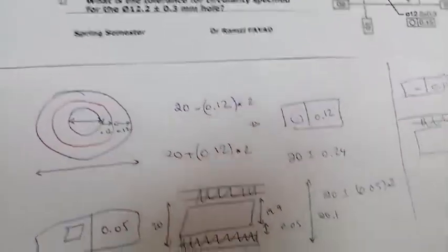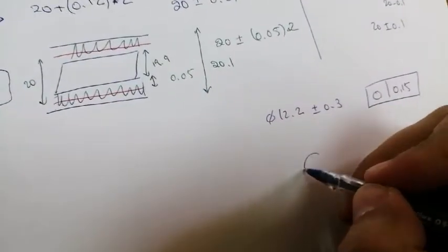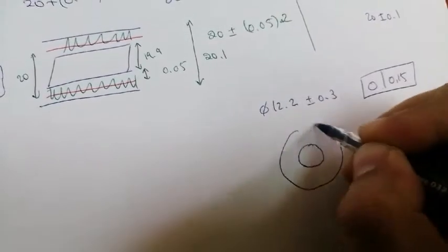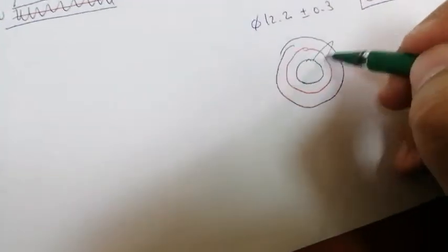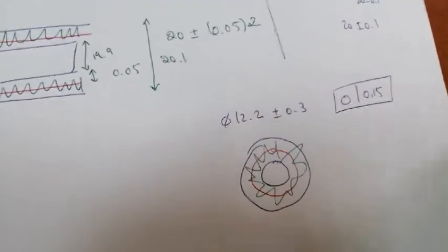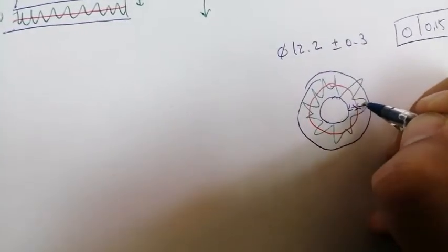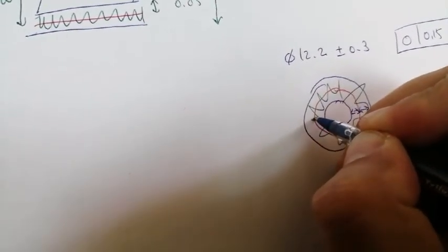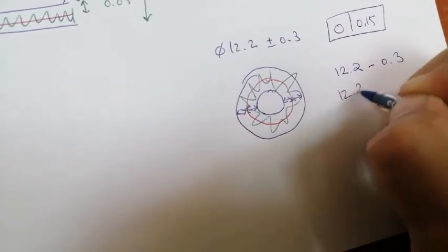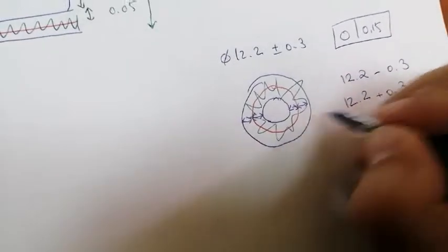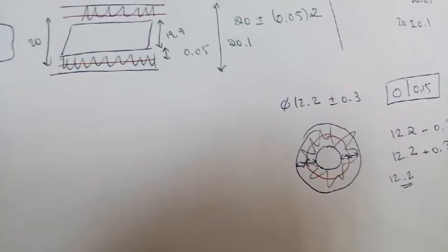The circularity tolerance is 0.15. We have a circle and the one in the middle is between the two — so it is 0.15 on all sides. The small circle diameter is 12.2 minus 0.3 and the largest diameter is 12.2 plus 0.3. The nominal circle diameter is 12.2.